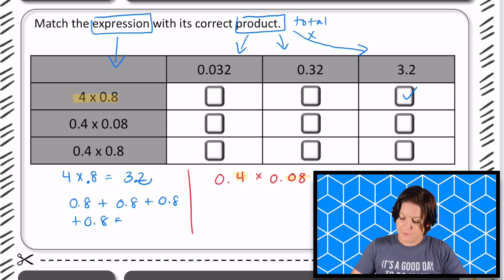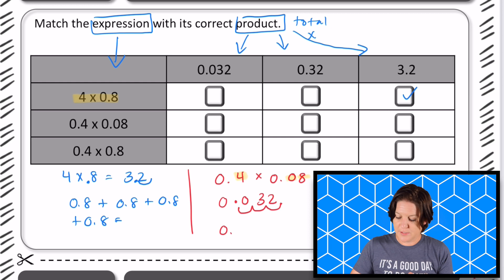So I know that 4 × 8 = 32. And because I need three digits behind the decimal, I'm going to go ahead and go one, two, three. There's my new decimal, a zero here to hold the place. And that leaves me with 0.032, which is this one right here.